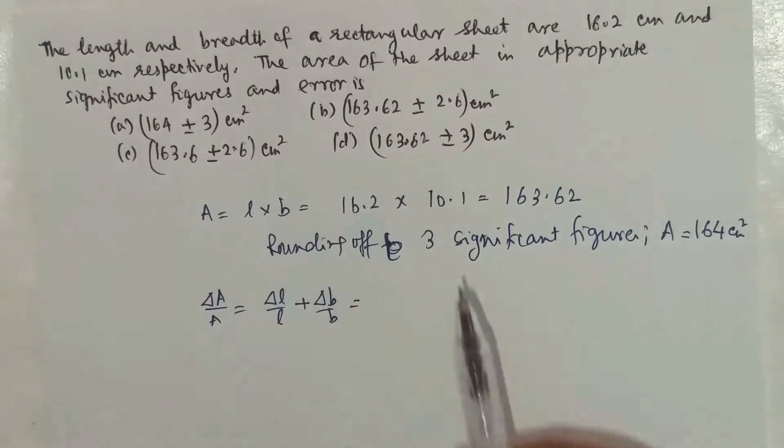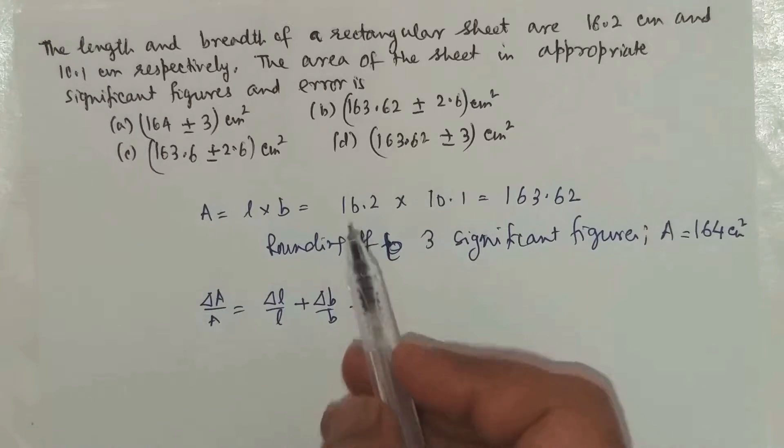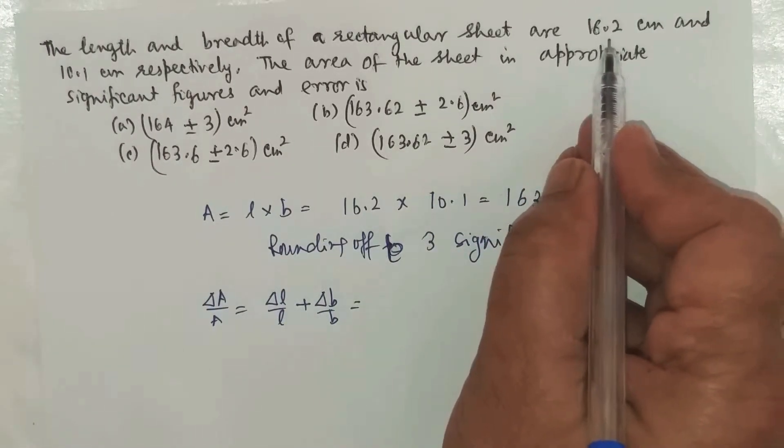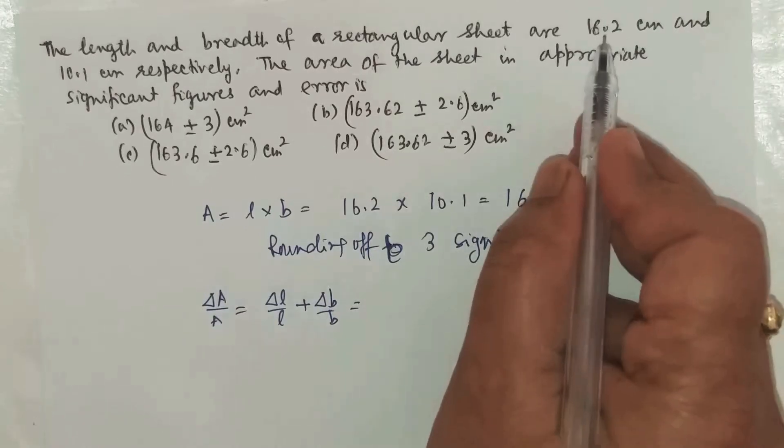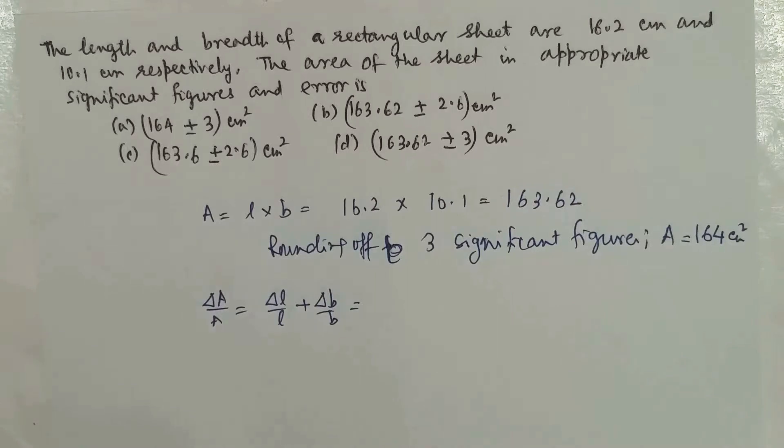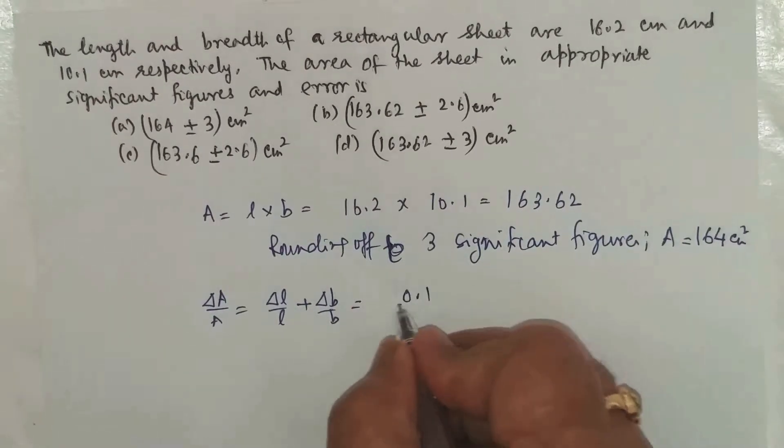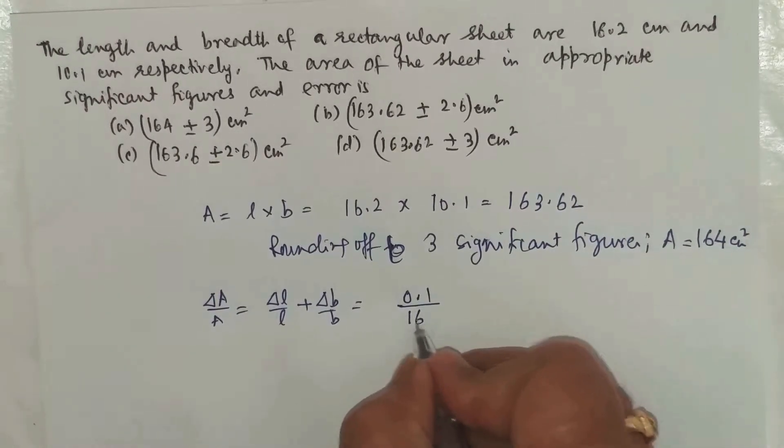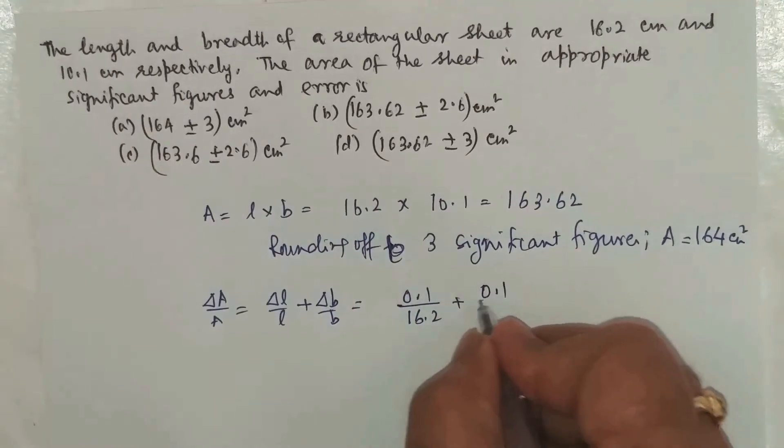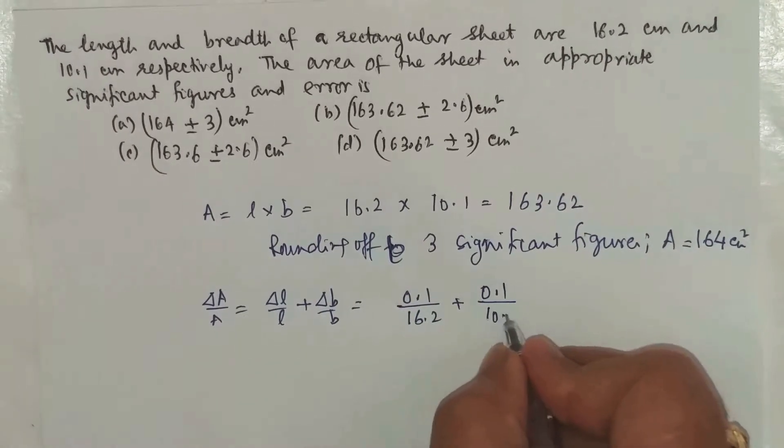So what is ΔL? ΔL: L was 16.2. What could have been the minimum difference between one value and the next consecutive value? 16.2, next 16.3. It is 0.1. That will be the error. So 0.1 divided by 16.2, and for breadth also, it will be 0.1 divided by 10.1. This comes out to be 0.016.